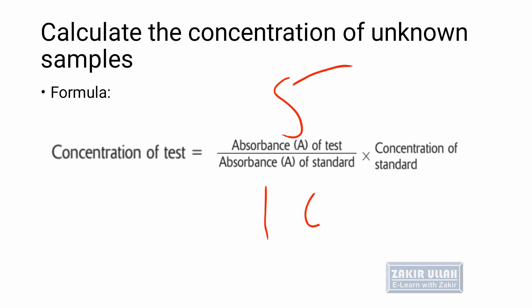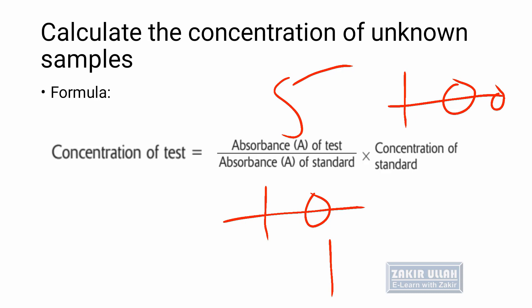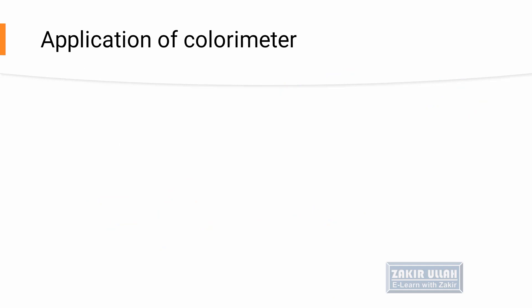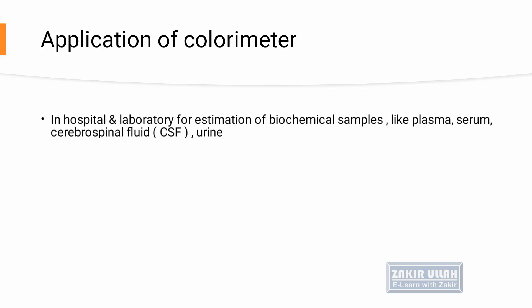For example, if the absorbance of the test is 5, the absorbance of the standard is 10, and the concentration of the standard is 100, then we can calculate the concentration of the test as 50. In this way, we can calculate the concentration of the unknown sample using this formula.